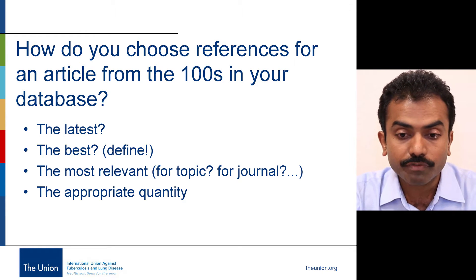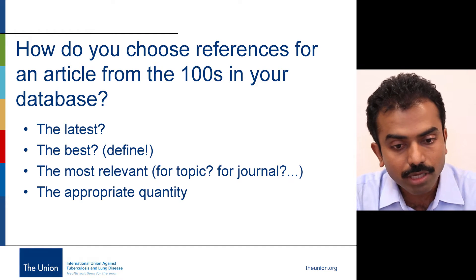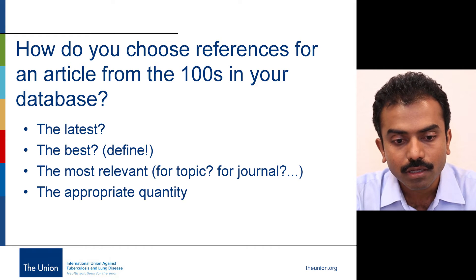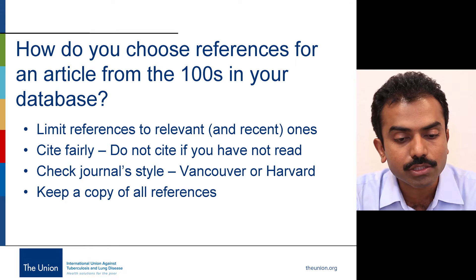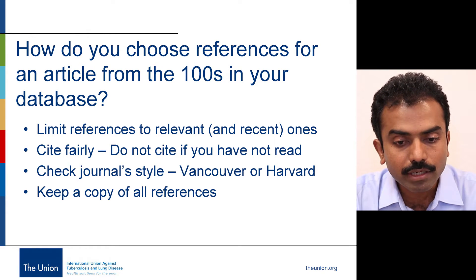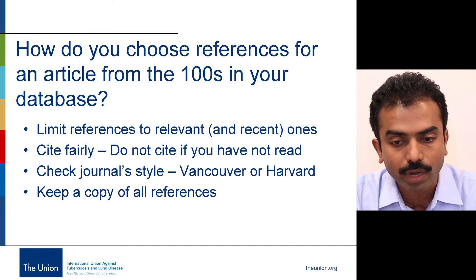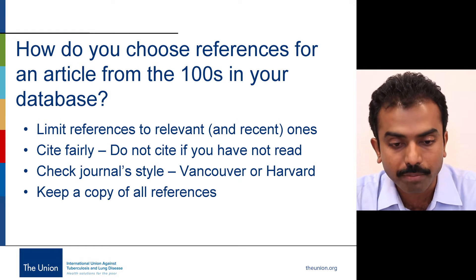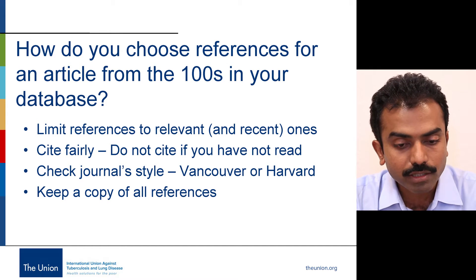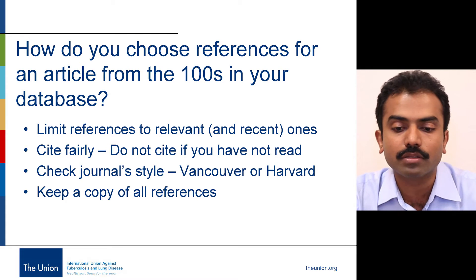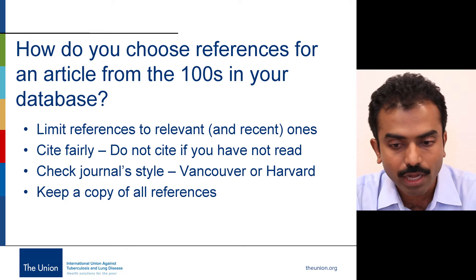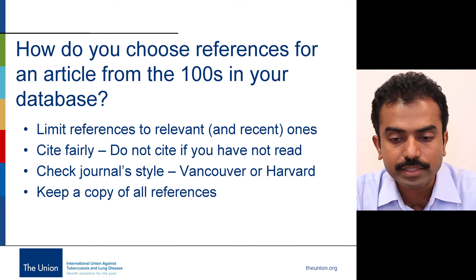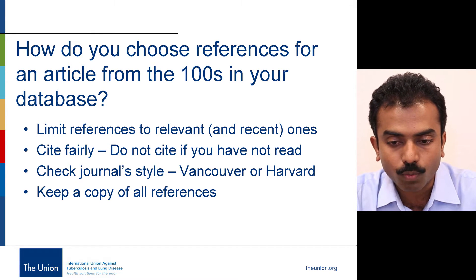How do we choose our references, especially if you have a lot? Do you choose the latest? Maybe. Do you choose the best? Then we have to define what is best. Do you choose the most relevant? Yes, that's important. And how much? Probably one principle is to not over-cite. Limiting references to relevant ones and probably the recent ones should do. And cite fairly — do not cite if you haven't read the full article. Check the journal style of referencing. We'll talk about this later — whether you want to use Vancouver style or Harvard style. Virtually nowadays each journal has variations of these two basic styles, so you may have 5,000 different styles, one for each journal.